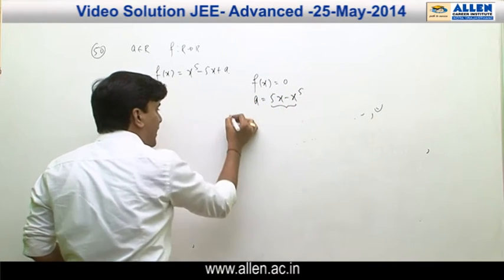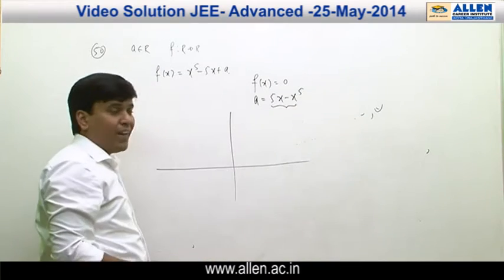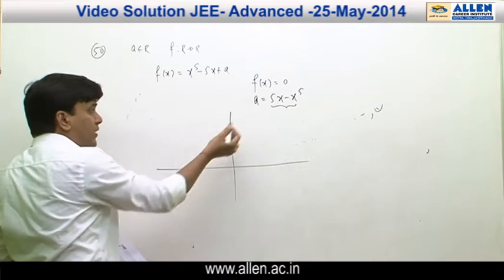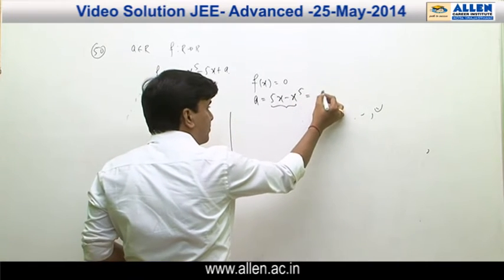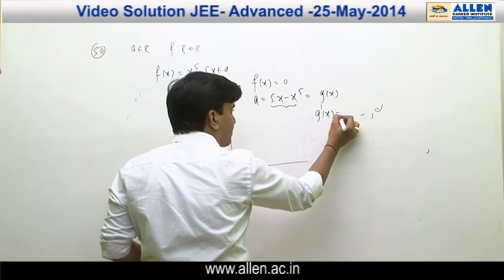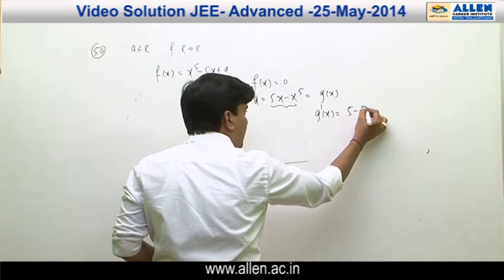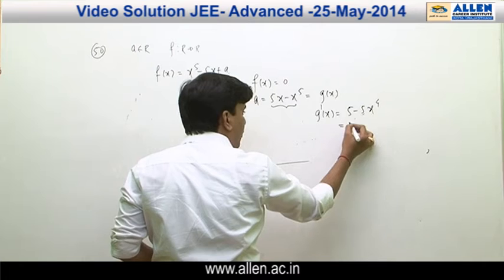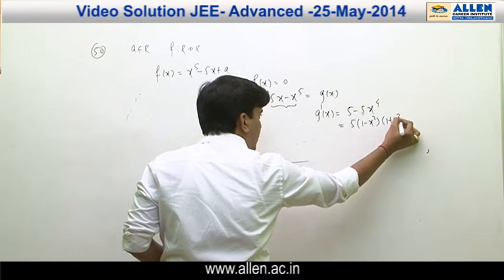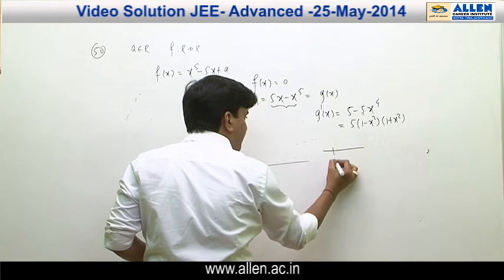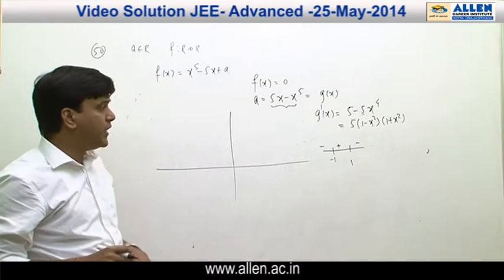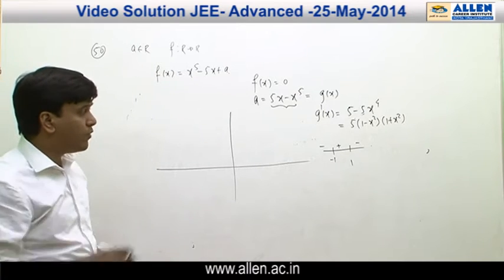Sketching the graph of g(x) = 5x minus x to the power 5: as x approaches minus infinity, this term goes to infinity. Calculating the monotonicity, g'(x) = 5 minus 5x to the power 4, which factors as 5(1 minus x²)(1 plus x²). On the number line, the function increases on (-1, 1) and decreases on (-∞, -1) and (1, ∞).